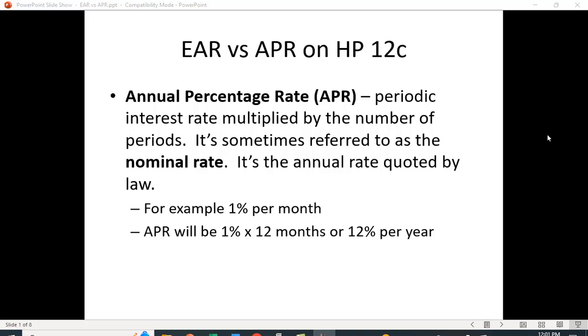The 12C doesn't have this function so there are a few keystrokes you have to go through. Just to recap, the annual percentage rate is the periodic interest rate multiplied by the number of periods. It's sometimes referred to as the nominal rate and it's the annual rate quoted by law. For example, if it's 1% per month, there are 12 months in a year, the APR is going to be 12% per year.